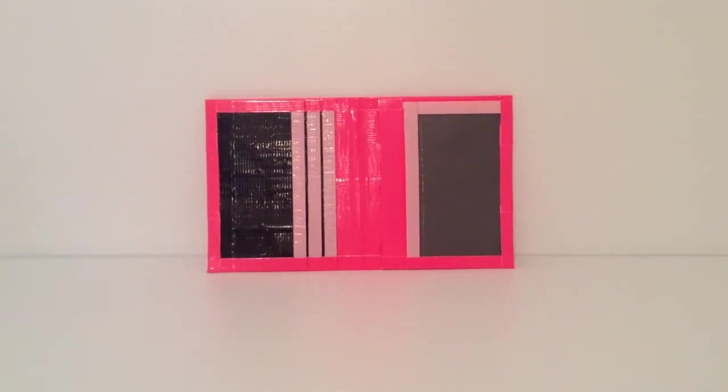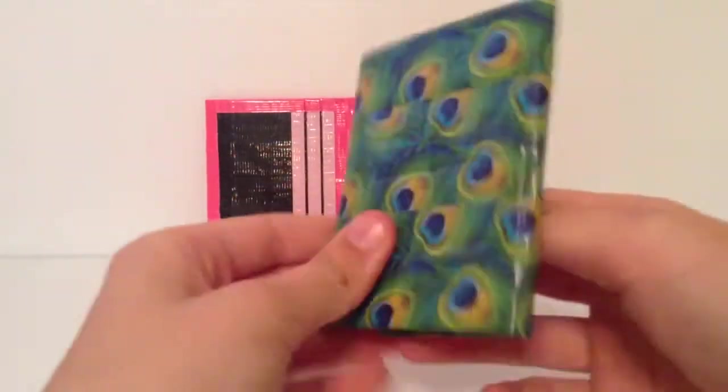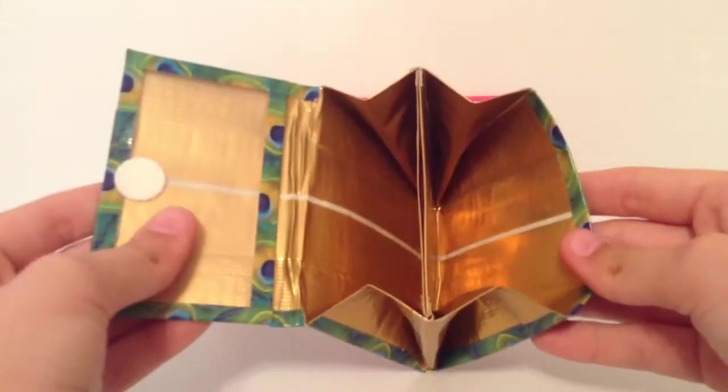Then I have some accordion wallets. So I have this peacock one with gold and it has a litty stripe and a frosted plastic ID and obviously there's a coin patch in the middle.